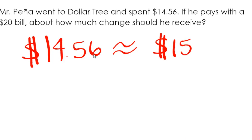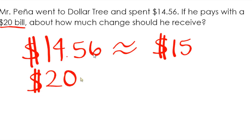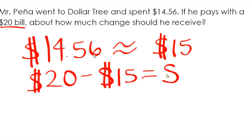Now, if I'm paying with a $20.00 bill, I want to know how much change I'm going to get. So I'm going to subtract. So I have $20.00 minus $15.00 is equal to $5.00 in change. So I should receive about $5.00 in change.